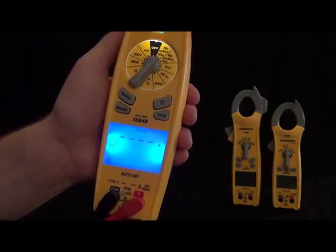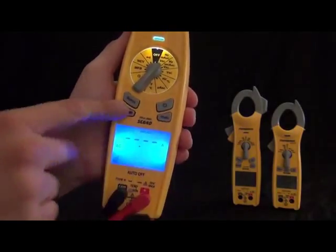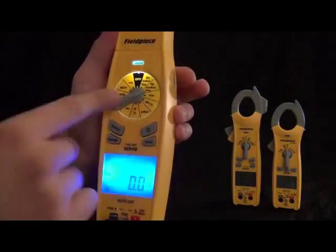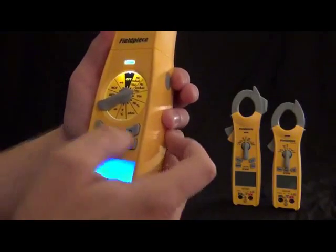And that is the SC 600 series. This is the 640. We also have the 620 available, which is fairly similar, just a little bit less features.